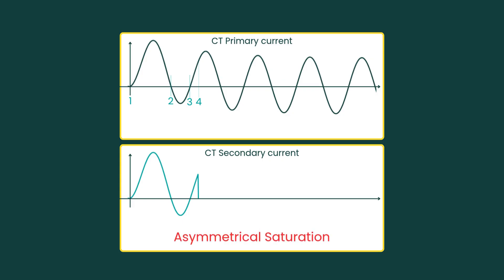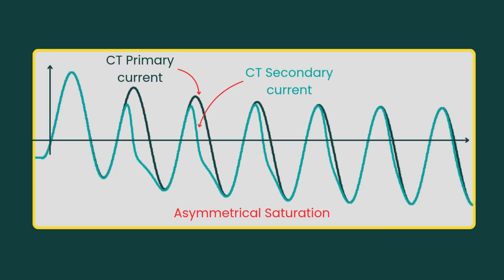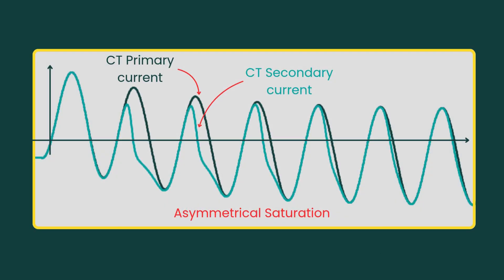It's not just the fault current magnitude that causes it; the DC offset plays a key role, especially during the first few cycles. For protection relays, this matters a lot. They rely on the CT's output during transient conditions to operate correctly.